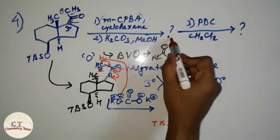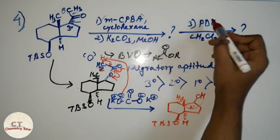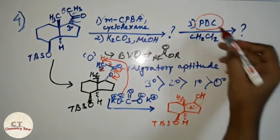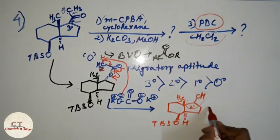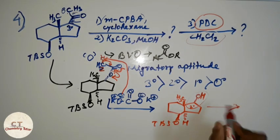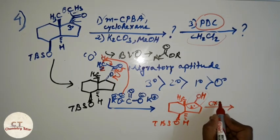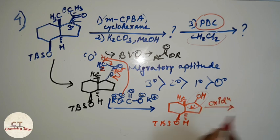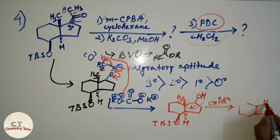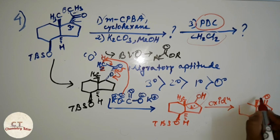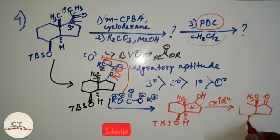In the next step, PDC — pyridinium dichromate — in the presence of dichloromethane is given. Its role is oxidation. There is a secondary alcohol, so it will be converted to a ketone. This is the final product of this reaction.